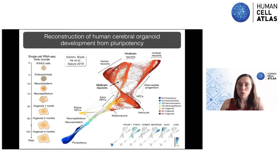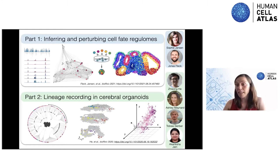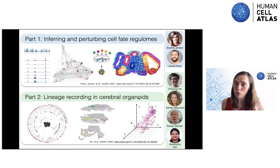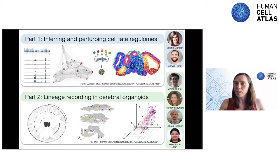Today I want to talk about two projects that extend this previous work beyond simply profiling transcriptomes. In the first part, we go into gene regulatory mechanisms and try to infer and perturb single-cell regulomes during brain organoid development — work done by fantastic PhD students Sophie Jansen and Jonas Fleck. In the second part, I'll present our new tools to directly measure lineage relationships paired with single-cell transcriptomics in cerebral organoids, which has been a great teamwork by Chisong He, Ashley Maynard, Tobias Gerber, and Akang Shah-Jen.